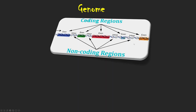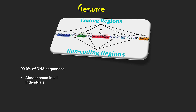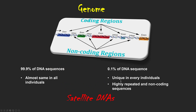If you can see, the eukaryotic genome is made up of coding regions and non-coding regions. Coding regions are mainly involved in the synthesis of protein and RNA. But non-coding regions are also important for any eukaryotic system. In the genome, 99.9% of DNA sequences are almost the same in different individuals — here I am talking about human beings — while 0.1% of DNA sequences are unique. This unique DNA sequence is highly repeated and non-coding, and is known as satellite DNA.